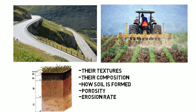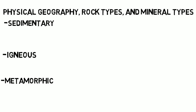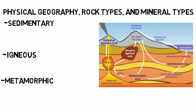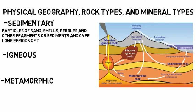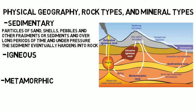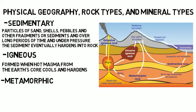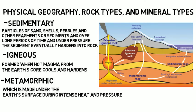In your second or early third year, you will take a closer look at physical geography, rock types, and mineral types. For example, you will learn about the three classes of rock, which are sedimentary, igneous, and metamorphic, and the differences among them and how they are formed. Sedimentary rock is formed from particles of sand, shells, pebbles, and other fragments or sediments, and over long periods of time and under pressure, the sediment eventually hardens into rock. Igneous rock is formed when hot magma from the Earth's core cools and hardens — you are probably most familiar with obsidian, which is often carved into obsidian arrowheads. And lastly, metamorphic rock is made under the Earth's surface during intense heat and pressure; one example of metamorphic rock is marble. In a lab, you might be expected to analyze what type of rock you are looking at and be able to list what classification it is.